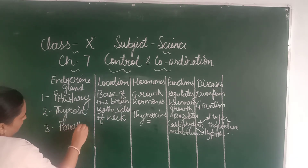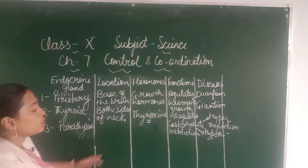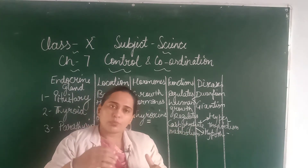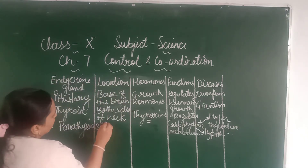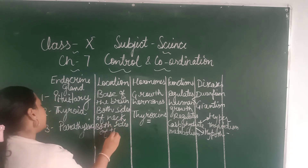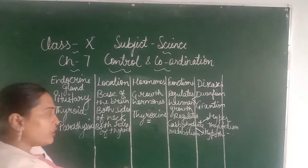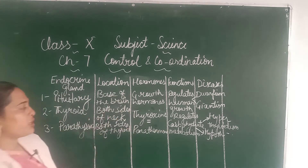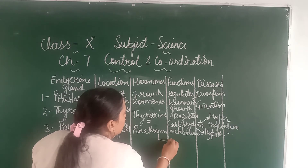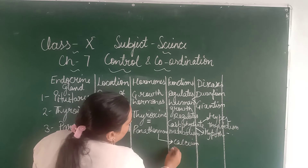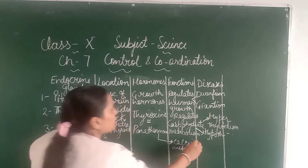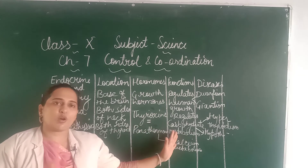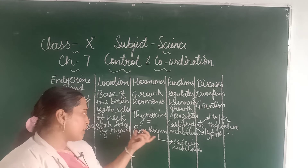The third gland is the parathyroid gland. It is present on both sides of the thyroid gland — two parathyroid glands on each side of the thyroid. The hormone secreted here is parathormone, and its function is calcium and phosphate metabolism. Our teeth and bones' health depends on parathormone. If it is secreted in large amount, the bones and teeth will be very healthy.